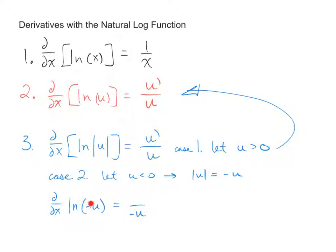like I had mentioned, that negative 1 is a constant, so it just comes along for the ride. So you'll end up with negative u prime in the numerator.